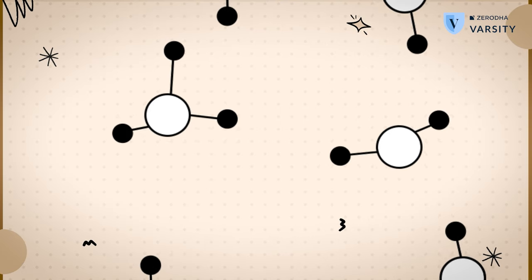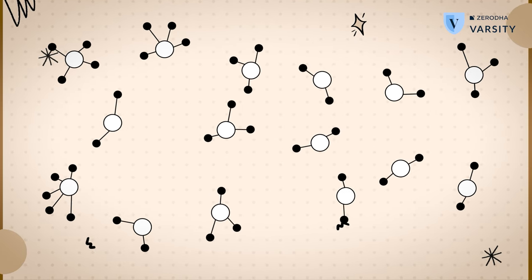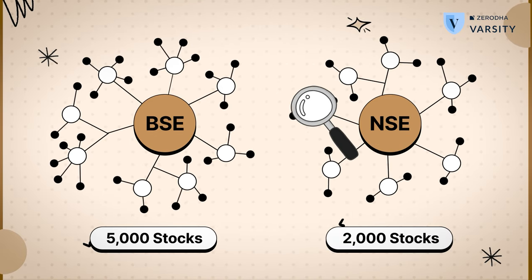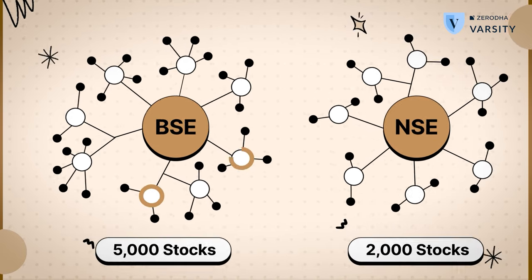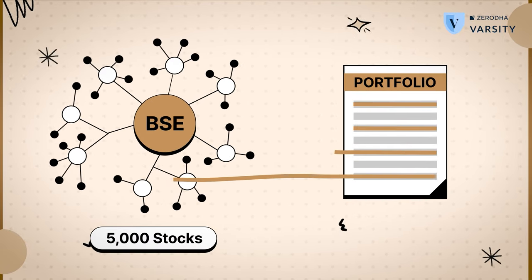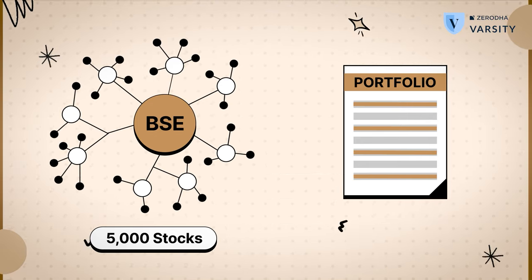If you are a programmer, building this portfolio will be very easy for you. If you're not a programmer, it's a bit of manual work, but you can take the help of one of those AI models to help you build one. The process of setting up this momentum portfolio involves six simple steps. Step 1: you need to define the universe of stocks. There are nearly 5,000 stocks in BSE and 2,000 in NSE — it is pointless to track all of them. You will have to pick and choose a certain set of stocks to track. The momentum portfolio you create will come from this tracking universe.